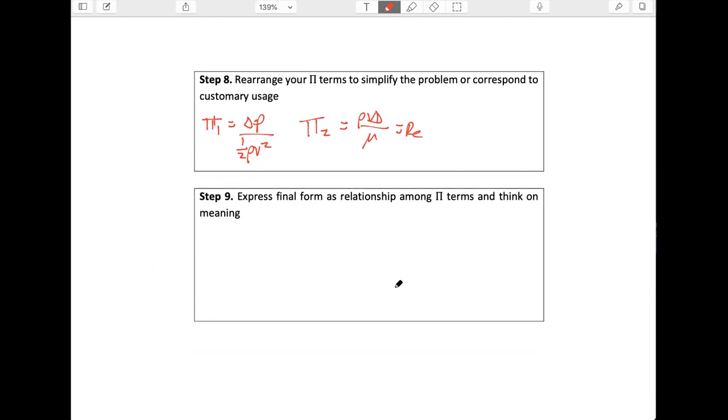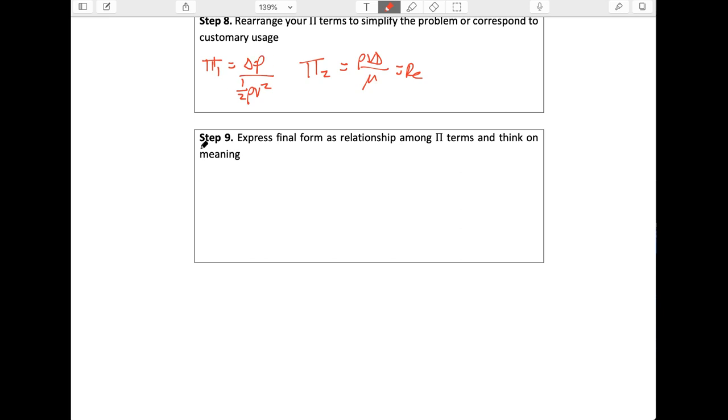And so, finally, what we want to do is just write this out as an expression. So delta P over one-half rho V squared should be a function of some unknown function phi of rho V D over mu, L over D, and epsilon over D. Just backtracking for half a second, there's a whole table of common terms that shows up in the book, and you can go look through and see there's a thing that looks like delta P over rho V squared, but it has a half on there, so we're just going to snag that.